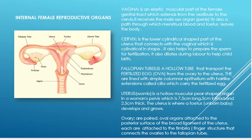The vagina is a fibromuscular canal which is about 10 centimeters long and is lined with non-keratinized stratified squamous epithelium. The vagina has numerous roles to play, such as receiving the male sex organ — the penis — and receiving the sperm. It also plays a vital part in childbirth, as the fetus leaves the body through the vagina, and it is also the pathway by which menstrual blood leaves the body.